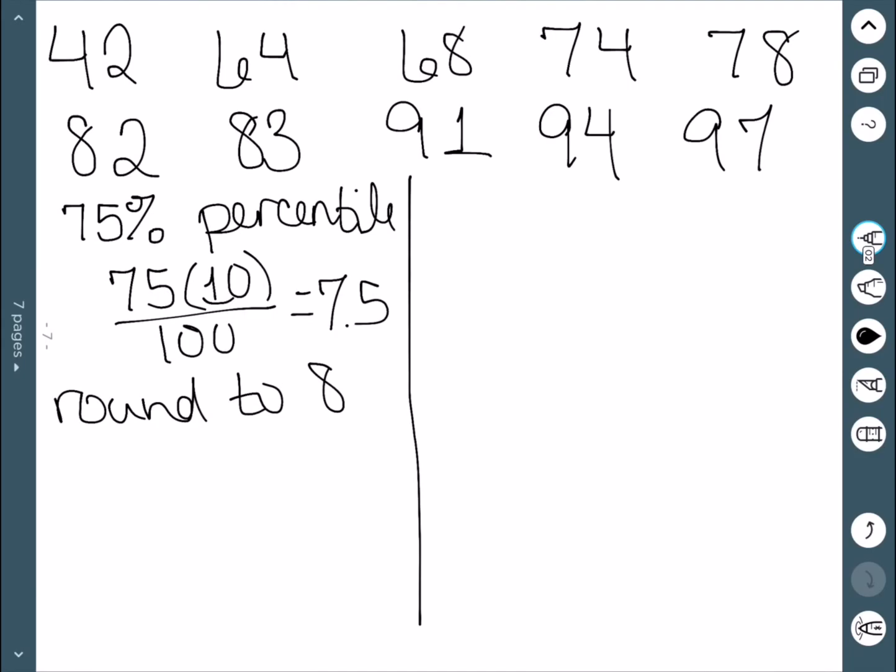Then we count out the 8th data value. There's 1, 2, 3, 4, 5, 6, 7. The 8th is the 91. So 91 corresponds to the 75th percentile.